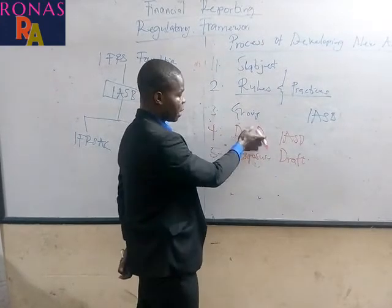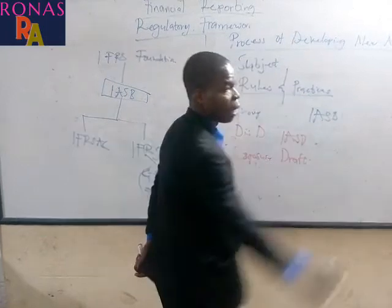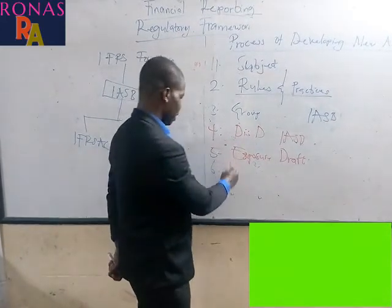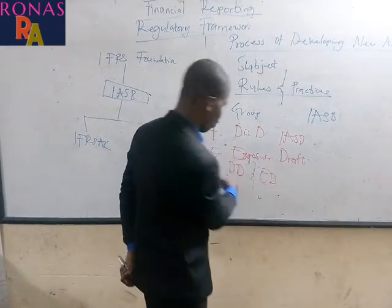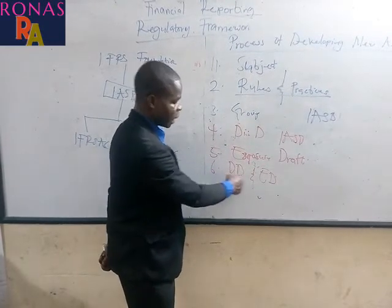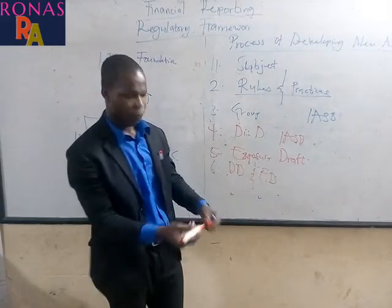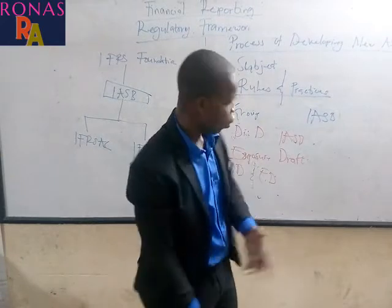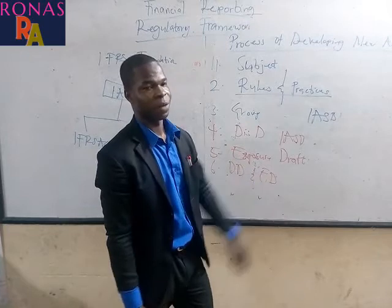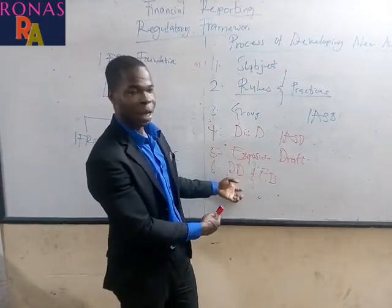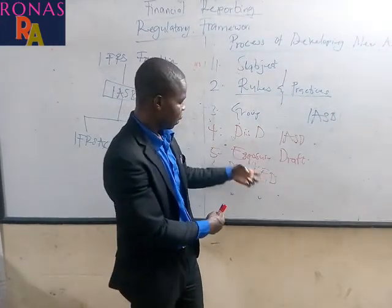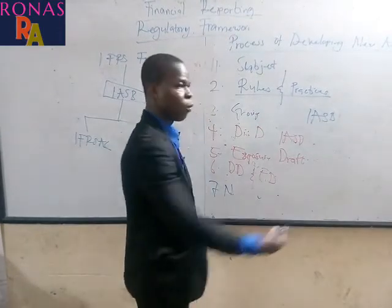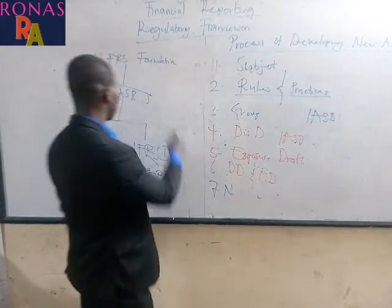The sixth step is that they consider the comments and views provided in the discussion document and the exposure draft. At this point they decide whether to hold a public hearing, conduct a field test, or issue a revised exposure draft. The seventh and final step is that a new approved standard is established — a standard must be approved by the board before it is established.